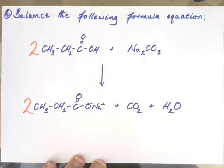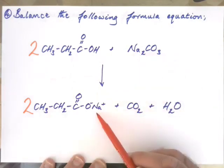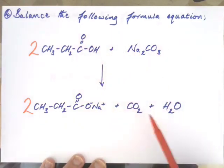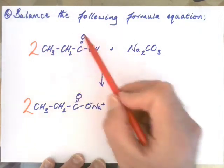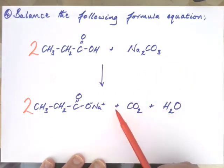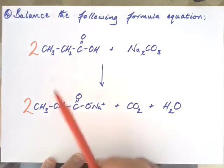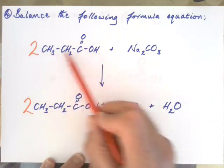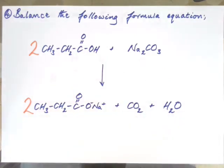Checking the balance: one carbon on each side, two sodiums on each side. Counting oxygens — four here, then five, six, seven oxygens in total on each side. Now hydrogens: three, four, five, six — twelve hydrogens in total on each side, which also comes to twelve. Everything balances. Sorted.